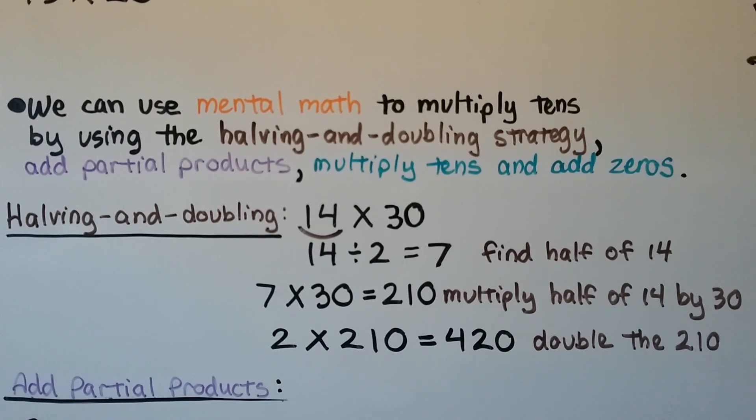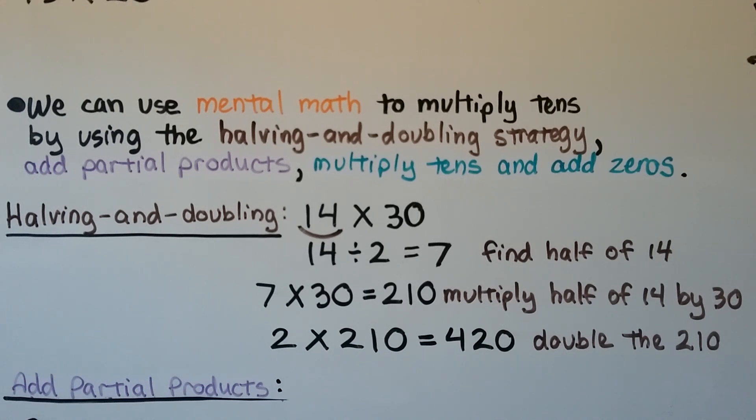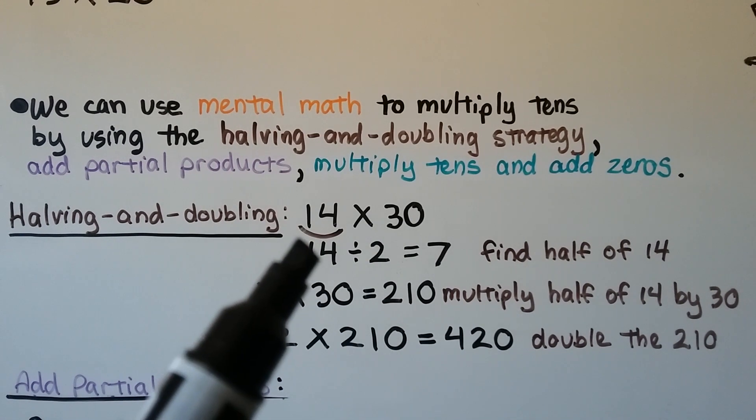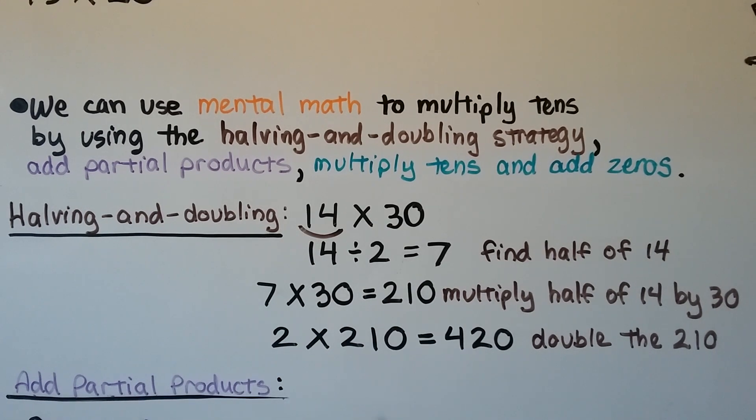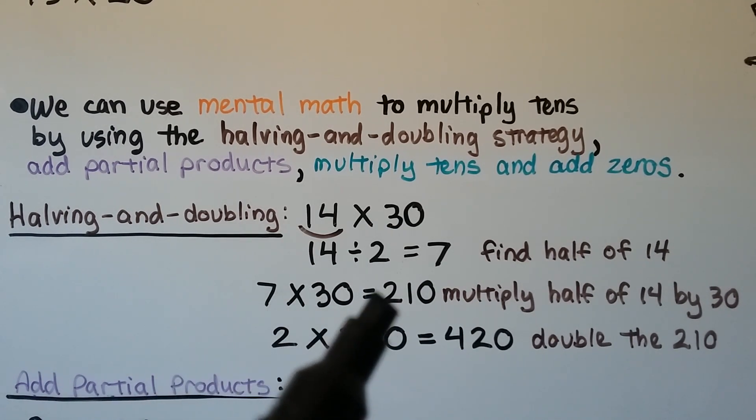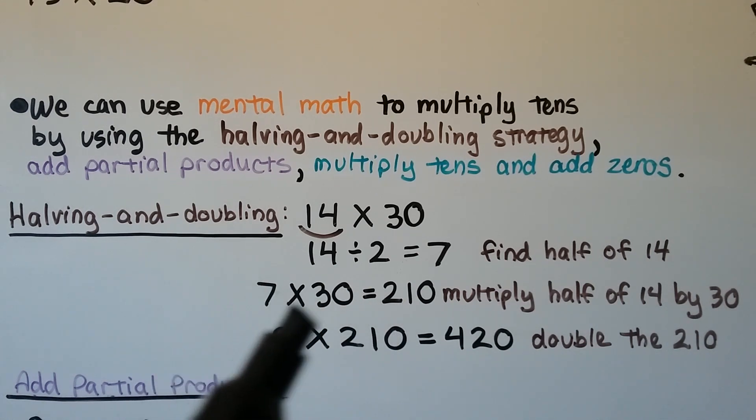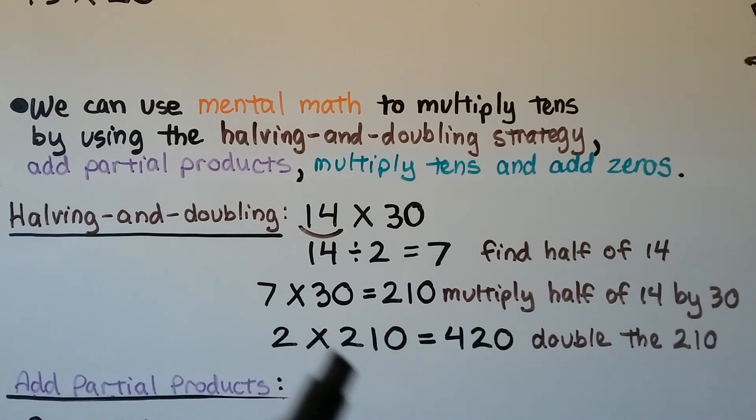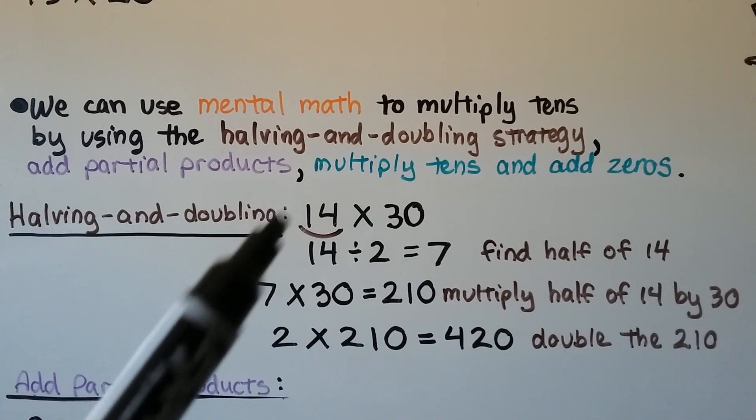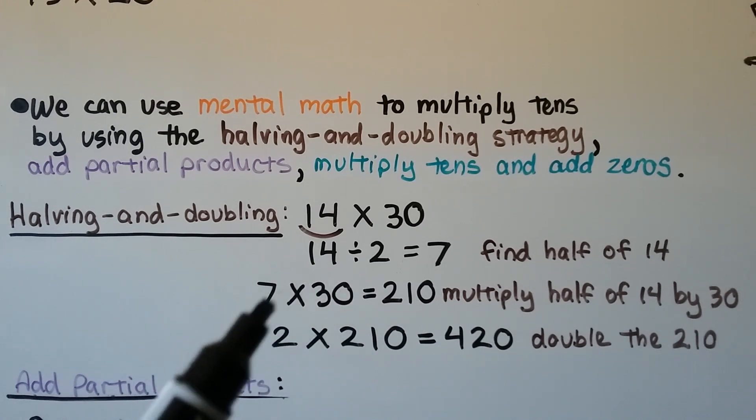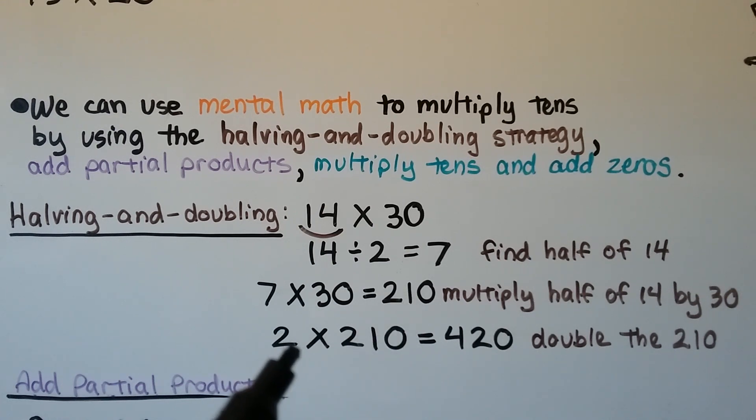And for our last strategy, we can use mental math to multiply 10s by using the halving and doubling strategy. We can add partial products or multiply 10s and add 0s. We could do this all in our head if we're good at math. For halving and doubling, if we want to multiply 14 times 30, we split the 14 in half. That's a 7. Then we do 7 times 30, which is 210, by multiplying that half by the 30, and then we double the product. 2 times 210 is equal to 420. So what we did was we cut this one in half, and we did 7 times 30, and we multiplied that product by 2. You can even say we added the two products to get 420.